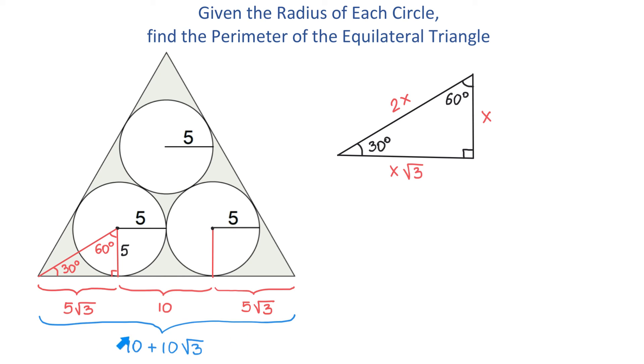Once we know one side, we multiply it by 3 to find the perimeter. The perimeter equals 3 times (10 + 10√3). Removing the parentheses, that's 30 plus 30√3. Approximating with a calculator, that's approximately 81.96 units.